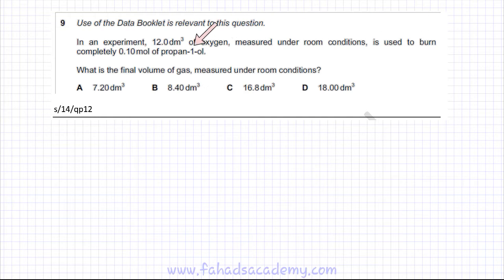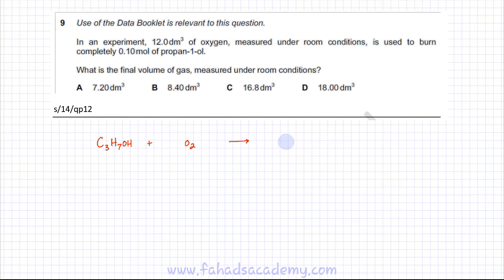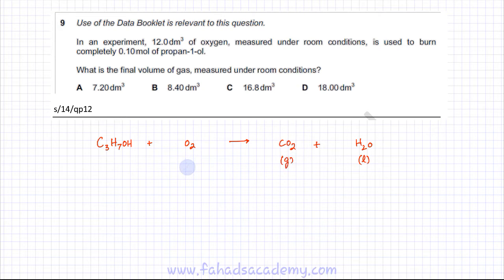Propanol is burning completely so we need to write an equation for propanol. Propanol is C3H7OH and it is combusting completely, so it's reacting with oxygen O2 and would produce two gases — carbon dioxide and water. Water would be liquid at room temperature, so let's write down the states. Carbon dioxide would be gaseous, oxygen would be gaseous, and propanol is also a liquid because it has an OH group which has very strong intermolecular forces.